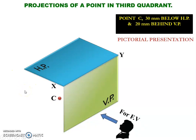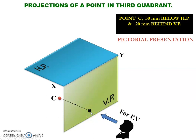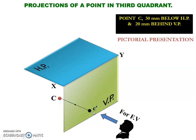To obtain the front view of this point we need to project this point onto the vertical plane. Ensure that this projector is perpendicular to the vertical plane. The projected point on the vertical plane is called the front view of point C, and this point should be denoted using the corresponding lowercase letter with dash — that is, we need to name this point as small letter C dash.